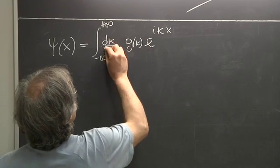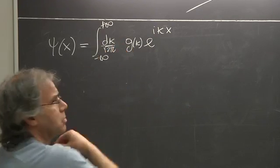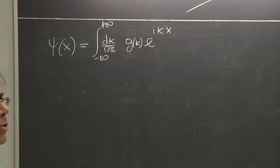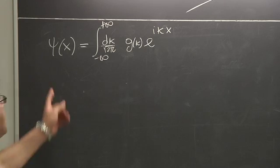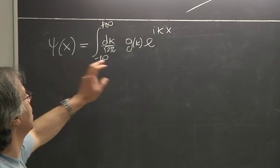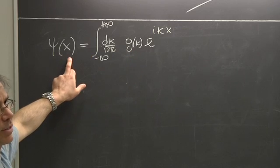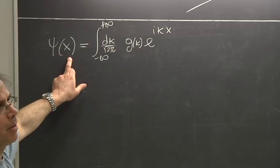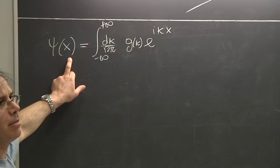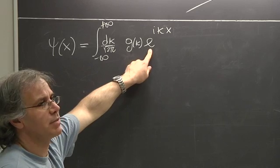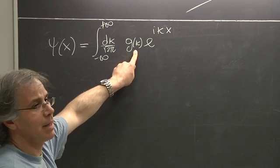For reasons which will be clear in a while, you put also a square root of 2 pi there. But this is strictly speaking just a Fourier transform of g of k into psi of x. But seen physically, it's a superposition of plane waves with some weight.